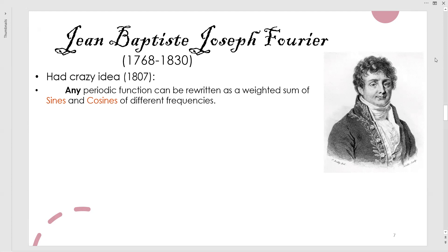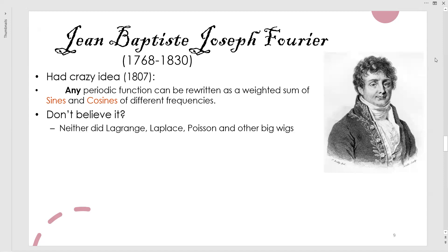Most of us know it because it contains harmonics and pulsating DC values. But not only us — big names like Lagrange, Laplace, Pythagoras, and most of the prominent figures of that era did not believe his theory. They struck off his theory saying it was not correct, and it was not even translated into English after his death, up until 1878.